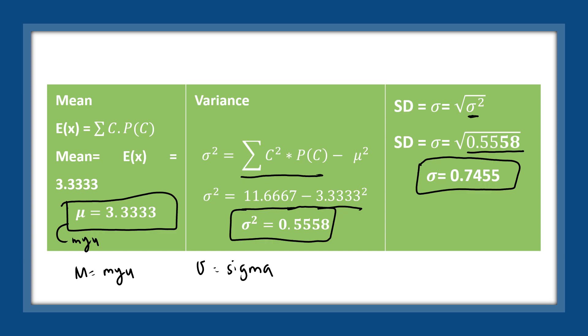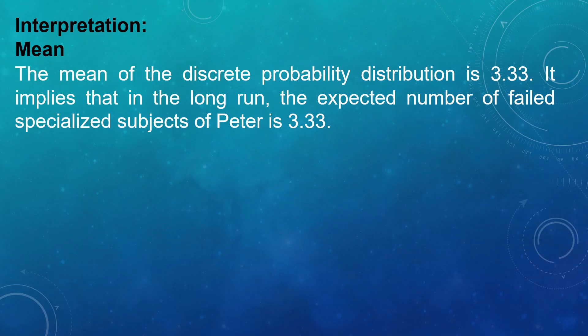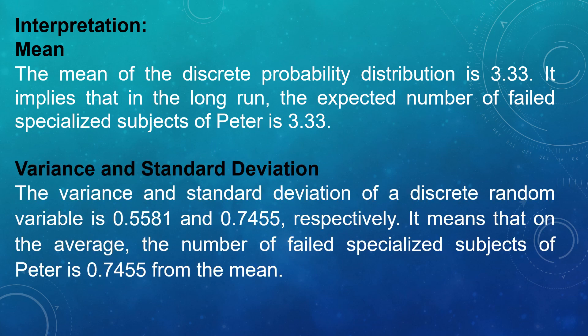To interpret the results: The mean of a discrete probability distribution is 3.33, which implies that in the long run, the expected number of failed core subjects of Peter is 3.33. The variance and standard deviation are 0.5558 and 0.7455, respectively. This means that on average, the number of failed core subjects of Peter is 0.7455 away from the mean. You can use this as your basis for interpreting mean, variance, and standard deviation.